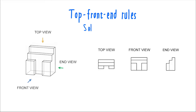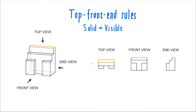In the views themselves, solid lines are used to depict edges and borders that are visible from that view. For instance, this flat area at the top of the object is depicted in the top view by these lines, in the front view by this long line, and in the end view by this short little line.